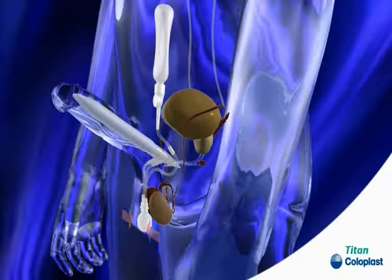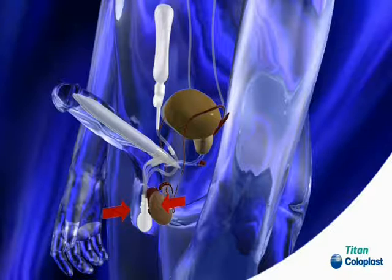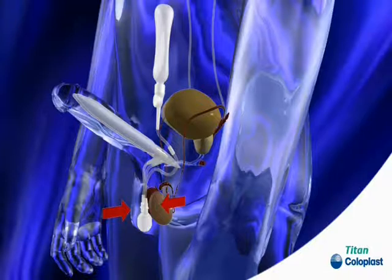To return the fluid from the cylinders back to the reservoir the release bar is squeezed. The release bar is located by following the top of the pump upwards as it narrows until the protruding bars are felt.